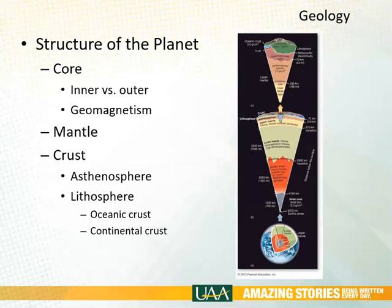Before we get there, we need to just touch on geology a little. The planet is structured with a solid metallic core surrounded by a silica-based mantle. On top of that mantle is something called the asthenosphere, which is a plastic-like material of almost liquid rock that the crust we live on essentially floats on top of.